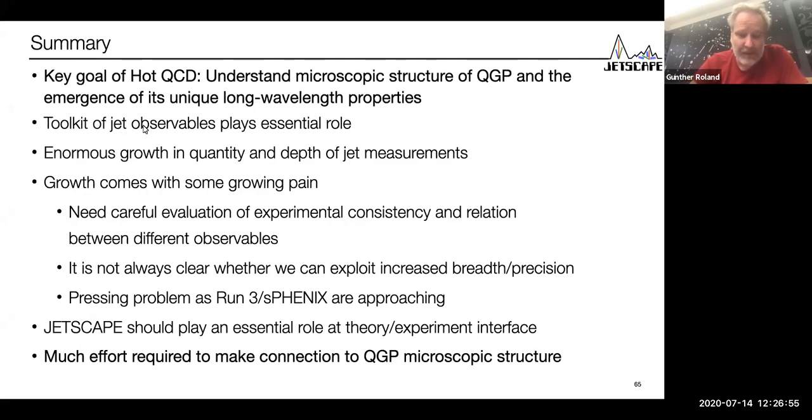The toolkit of jet observables plays an essential role there. There has been enormous growth in quantity and depth of jet measurements. This was about a third of the slides I started with. Growth always comes with growing pain. We need to carefully evaluate experimental consistency, the relation between different observables. We have to decide if we're really doing precision physics or not. We also have to learn on the theory side. Again, Jetscape plays a key role, whether we can exploit this explosion in observables and achieve increased precision.